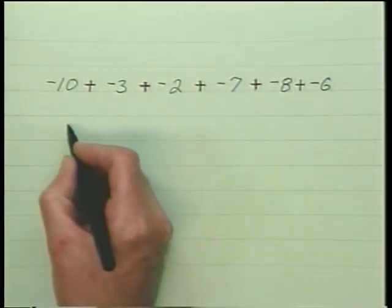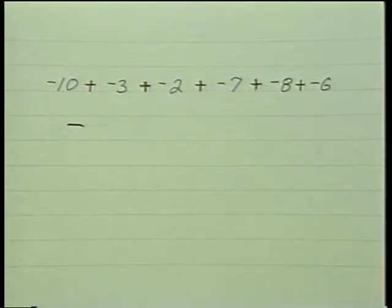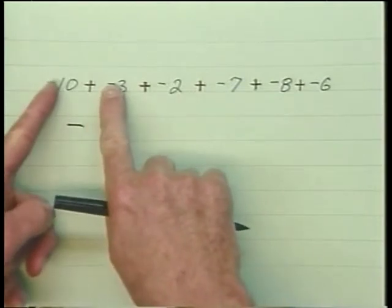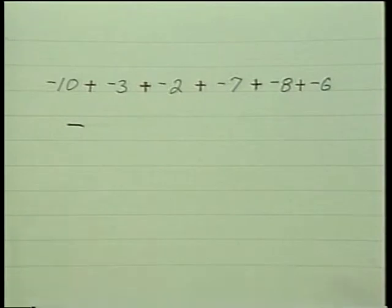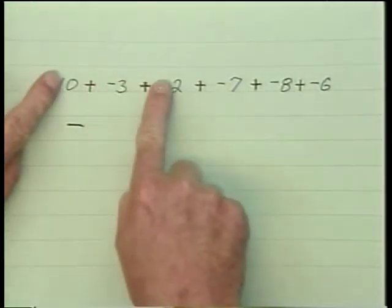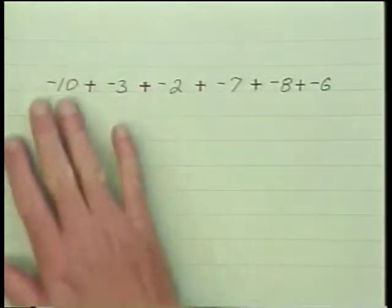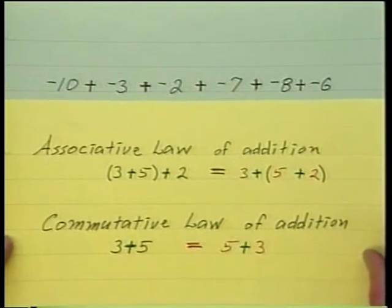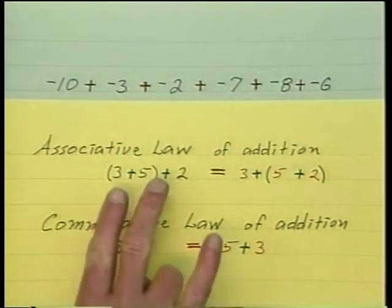Then the next thing we look at is the sign of the numbers being added. Notice in this particular case, every single term — that is, numbers being added — are all negative. So when signs are alike and we are adding, the sign of the answer stays alike. When adding like signs, the sign of the answer is still like.